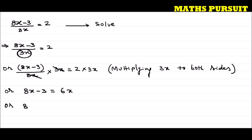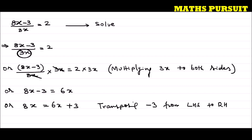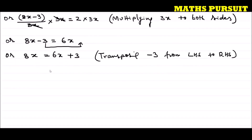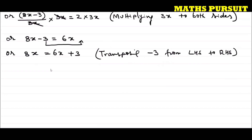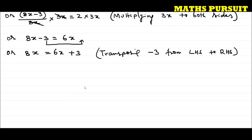Now I can write 8x is equal to 6x plus 3. I am transposing minus 3 from the left hand side to the right hand side. I want all variables with x on the left side and all constant numbers on the right side. When a negative number moves to the right side, its sign changes — that is, it becomes positive.